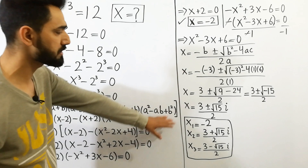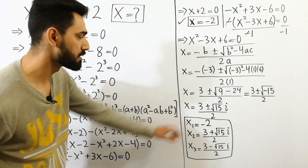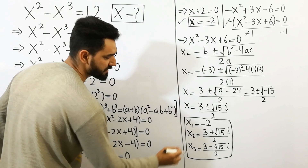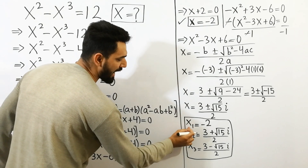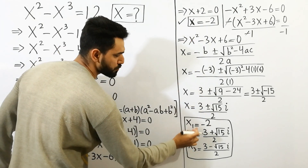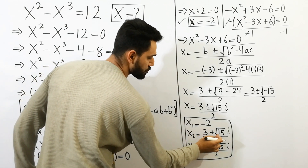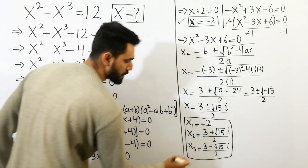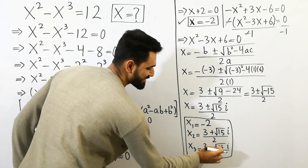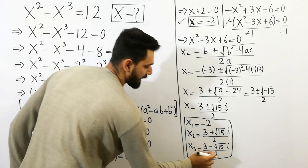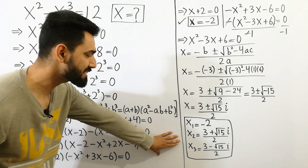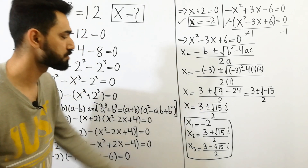x equals 3 plus or minus square root of minus 15, and since square root of minus 1 equals iota, divided by 2 — these are imaginary numbers. So the values of x are: x1 equals minus 2; x2 equals 3 plus square root of 15 times iota, divided by 2; x3 equals 3 minus square root of 15 times iota, divided by 2. These are the imaginary complex solutions, and x1 is the real solution.